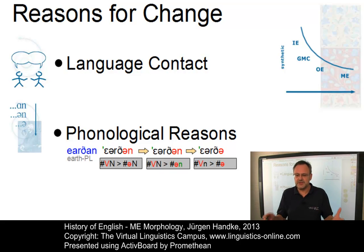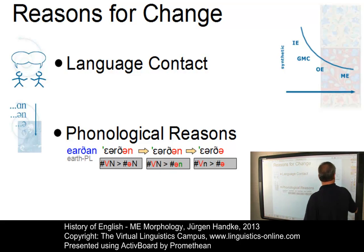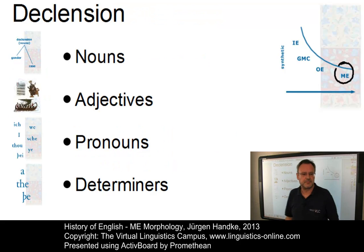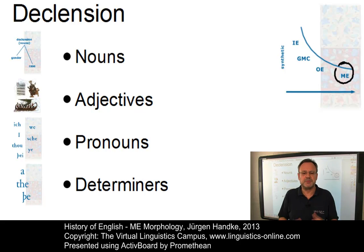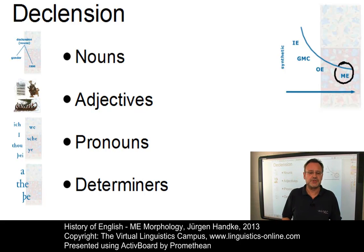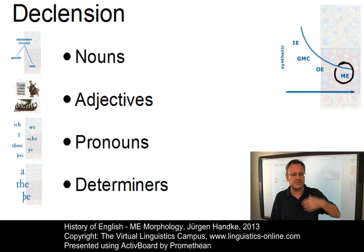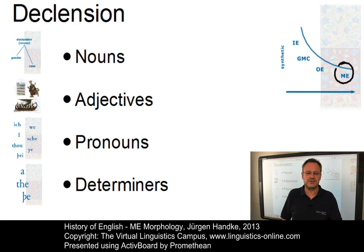By the end of the Middle English period, English only had a handful of inflections left over. Middle English had changed from a synthetic language to a much more analytic language, depending on word order and particles indicating the functional relationships between the words in a sentence. In comparison to Old English, the system of declensions — that is, inflections of nouns, adjectives, pronouns and determiners — was heavily reduced.